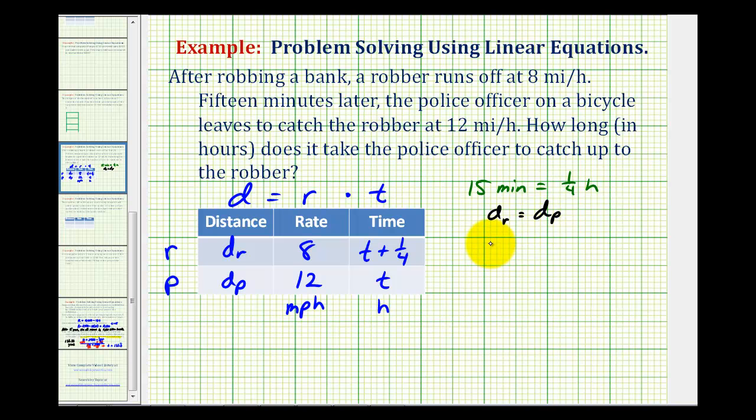Well we also know that d sub r is going to be equal to 8 times the quantity t plus 1 fourth. And d sub p is equal to 12 times t, or 12t, and now we have the equation that we need with one variable. So now we can solve this equation for t and answer the question.